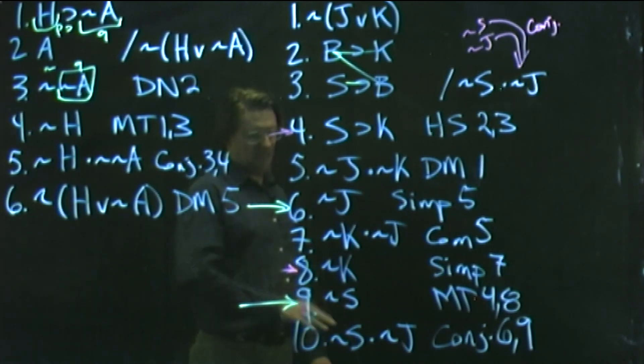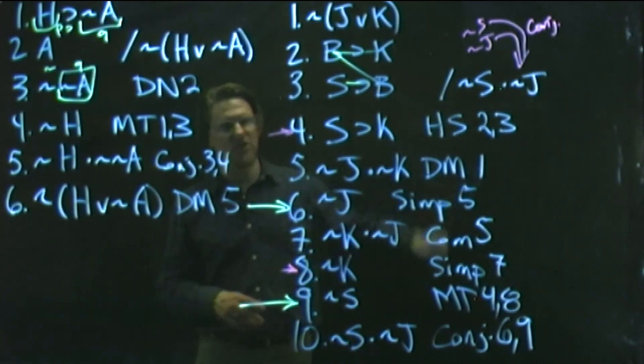The conjunction of six and nine gets us tilde S dot tilde J. Sometimes there's a question, can you glue these two pieces together in any order that you like when you do conjunction? The answer is yes, any order that you like. So just put them in the order that they are in the conclusion, and we've done it.